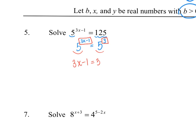Then we solve that equation, which is just a linear equation — just like normal. We get three x equals four, divide by three, so we have x equals four thirds.